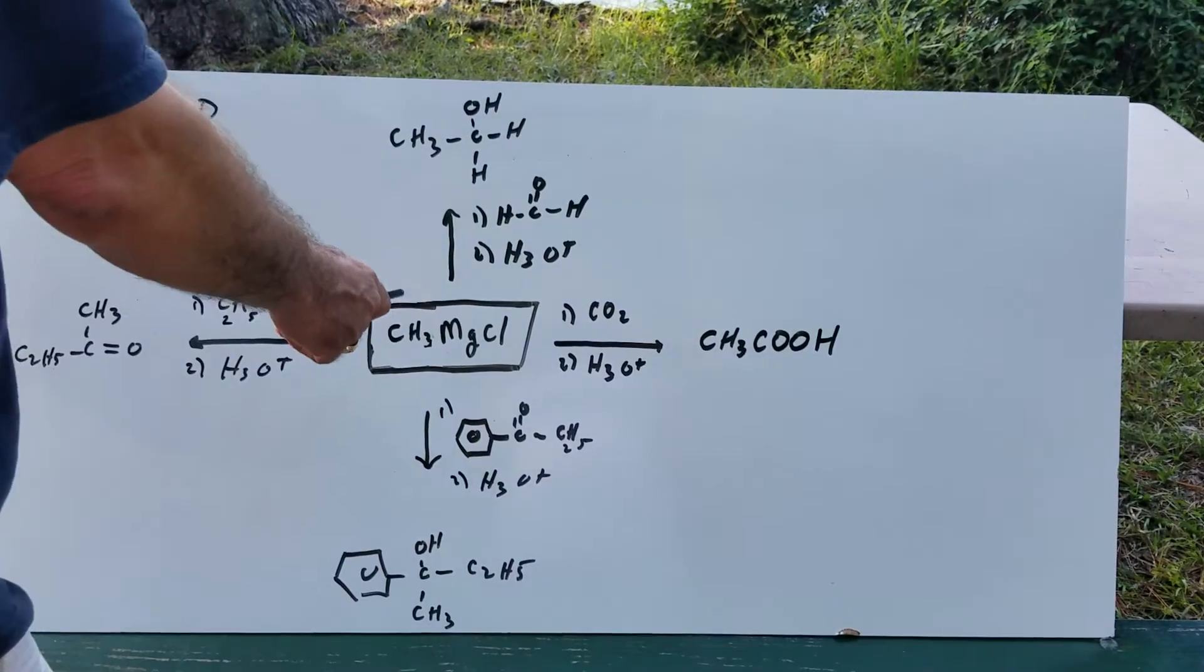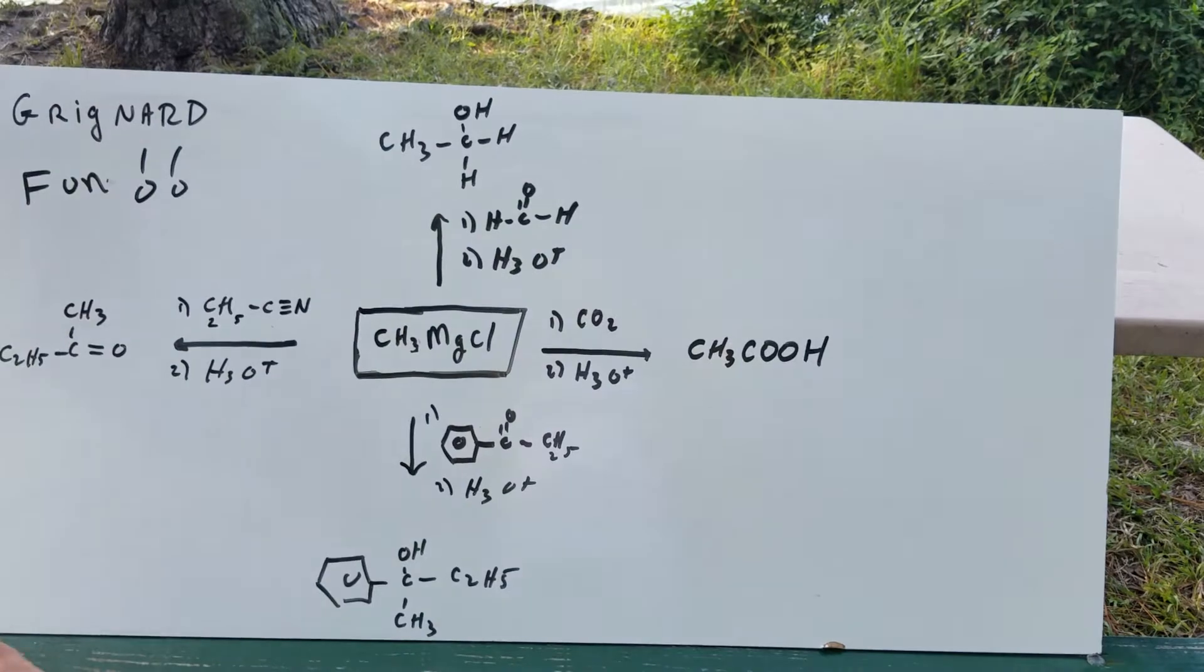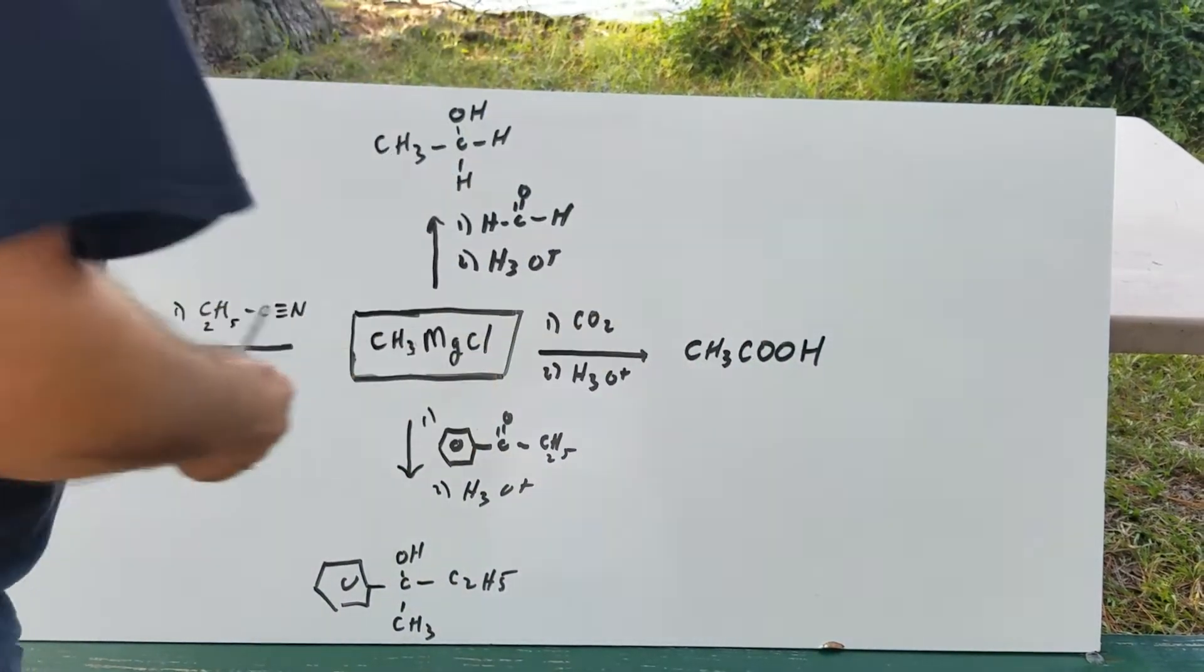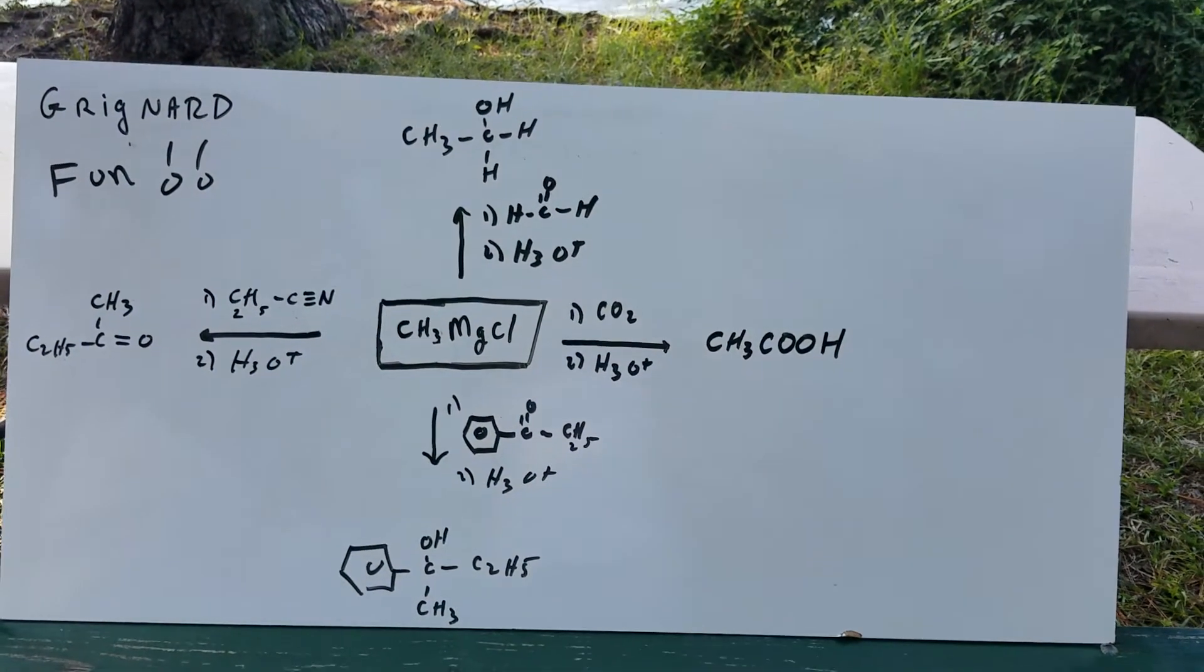First thing I want to do is to take a Grignard and treat it with CO2 and acid. What we simply do is that how I put on a COOH group.